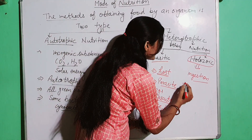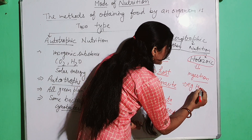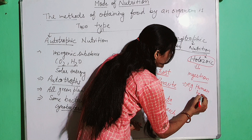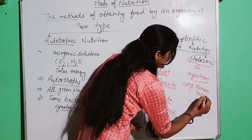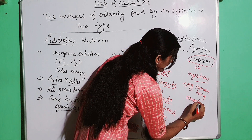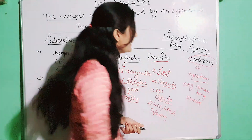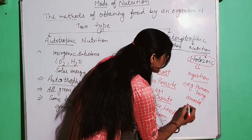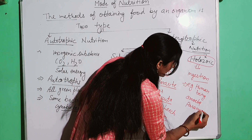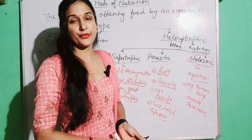Examples of holozoic mode of nutrition include human beings, amoeba, and paramecium — all of these follow holozoic mode of nutrition.